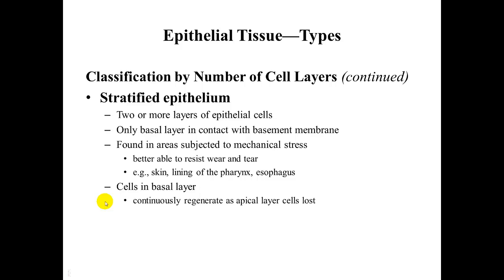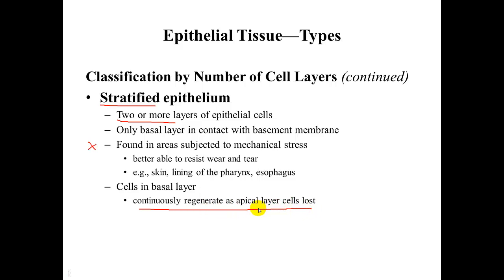Stratified epithelial — stratified standing for two or more layers of epithelial cells — has only the basal layer in contact with the basement membrane. These are found in areas subject to mechanical stresses; because of the multiple layers, they are better able to resist wear and tear. Examples include skin, the lining of the pharynx, and the esophagus. The cells in the basal layer continuously regenerate as the layers at the apical surface are lost, so they can be replenished.